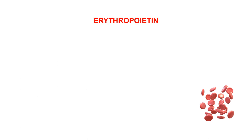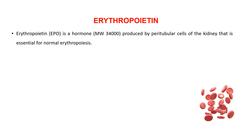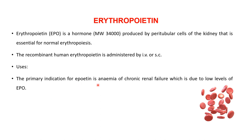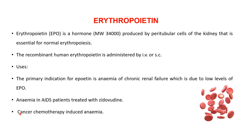The last class is erythropoietin, a hormone with a molecular weight of 34,000, produced by peritubular cells of the kidney, essential for normal erythropoiesis. Recombinant erythropoietin is administered either intravenously or subcutaneously. The primary indication is anemia of chronic renal failure. It is also used for anemia in AIDS patients treated with zidovudine, and for cancer chemotherapy-induced anemia. This concludes the topic of hematinics.